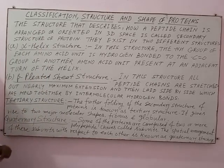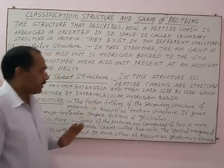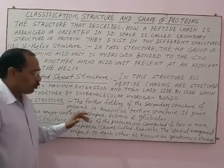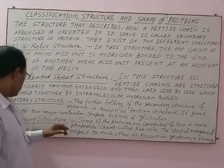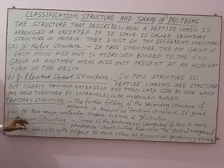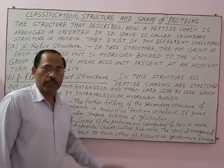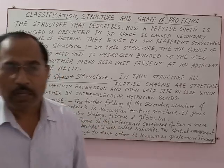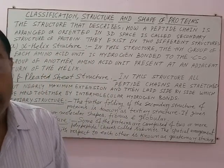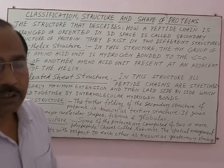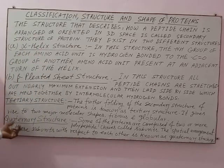Regarding the tertiary structure of protein: the further folding of the secondary structure of a protein is known as its tertiary structure. It gives rise to two major protein types — fibrous and globular — meaning all fibrous and globular proteins represent the tertiary structure of protein.